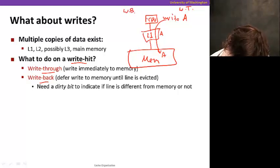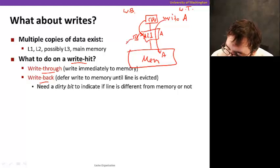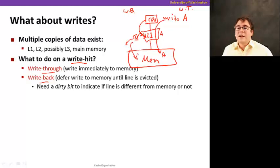Write back works as follows. This is write through. With write back, when the CPU writes to A here, it just writes to the cache. And now there's a little bit here that gets set that says, this data is now dirty. It means that the copy in memory might not be the same. So whenever this line is displaced, it's kicked out of the cache, it goes and sends the data to memory. We need a dirty bit to indicate that the line is different.